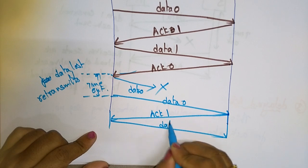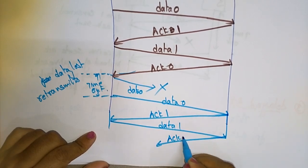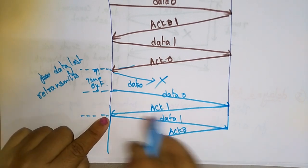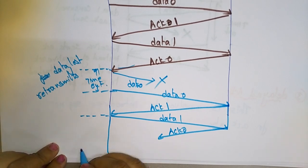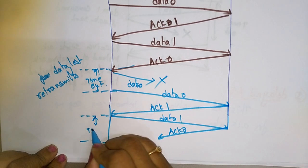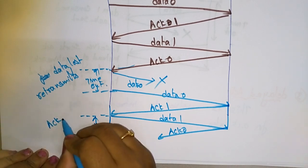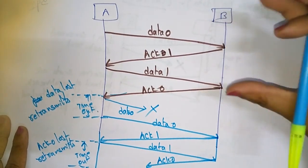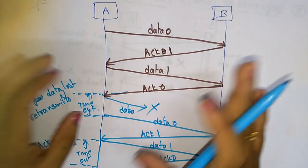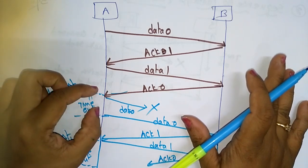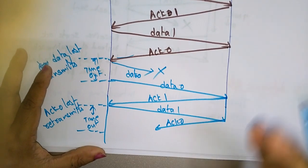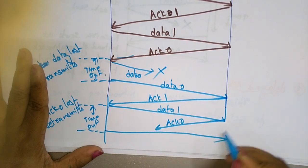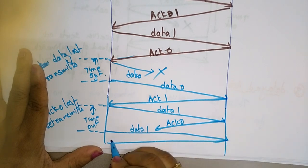This time, suppose the acknowledgement is lost. The sender waits until it receives the acknowledgement; when the timeout occurs it retransmits. The receiver simply takes the data and sends the acknowledgement — it is the sender that must retransmit whenever it doesn't receive the acknowledgement, whether the data or the acknowledgement was lost. So again it retransmits data 1, and next time it receives the acknowledgement successfully.